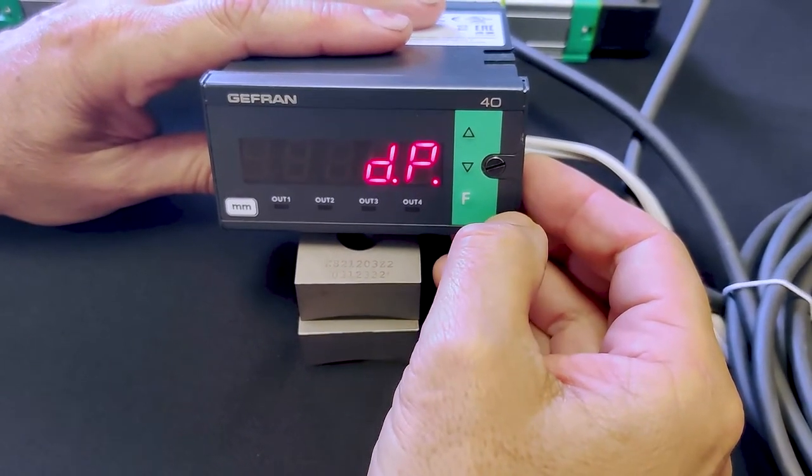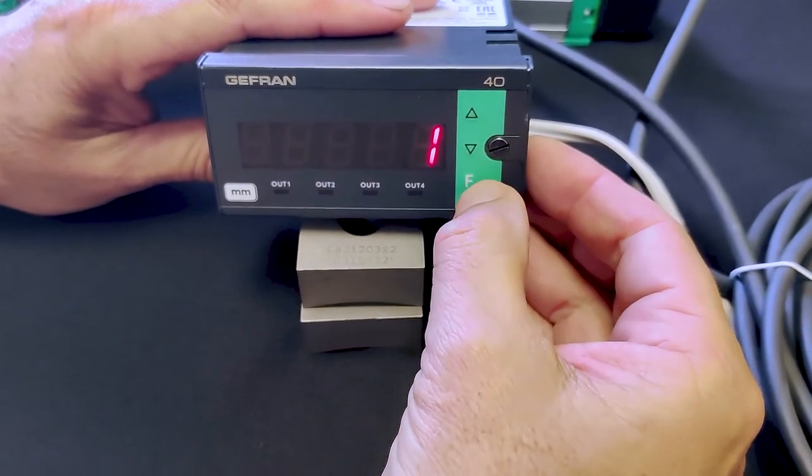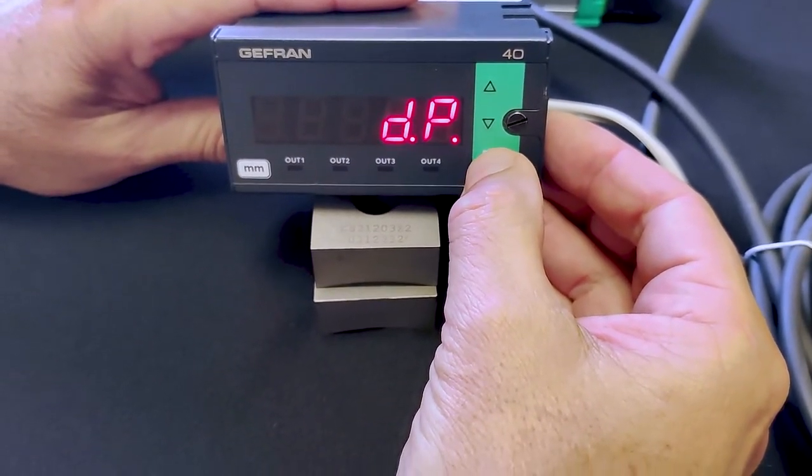DP is decimal point. We put one decimal point after. We gave you one digit after the decimal point.